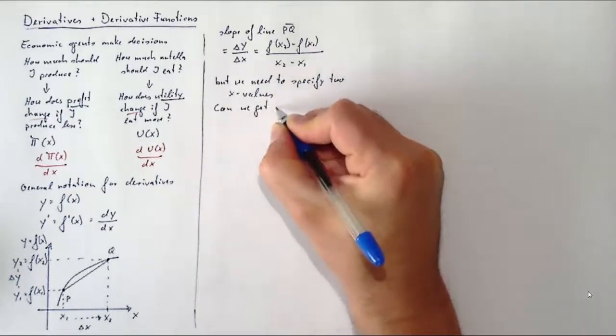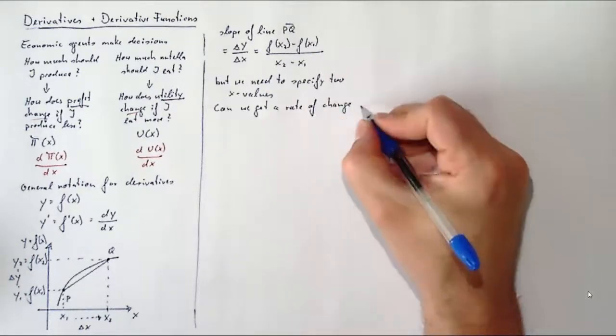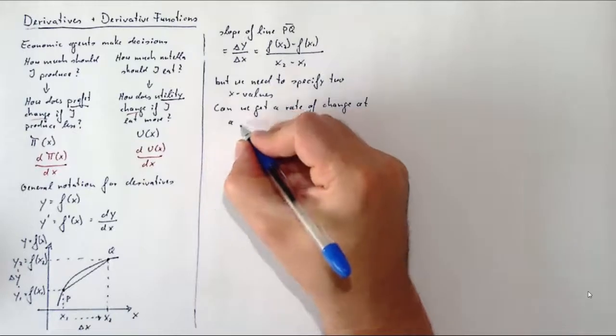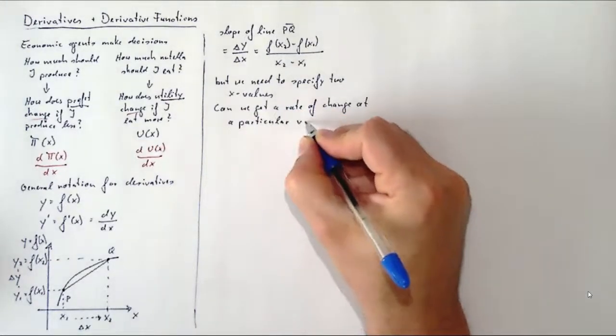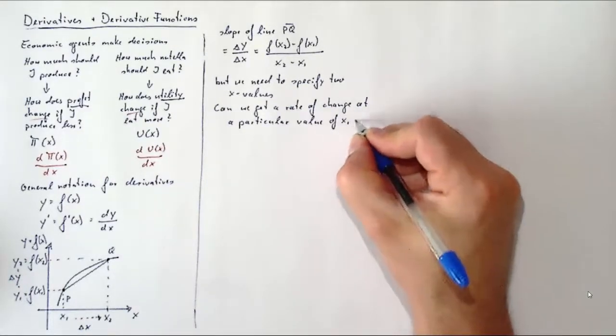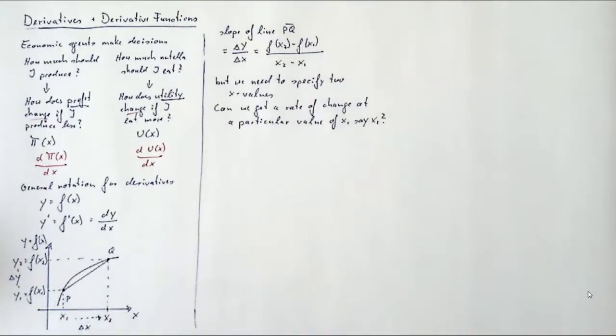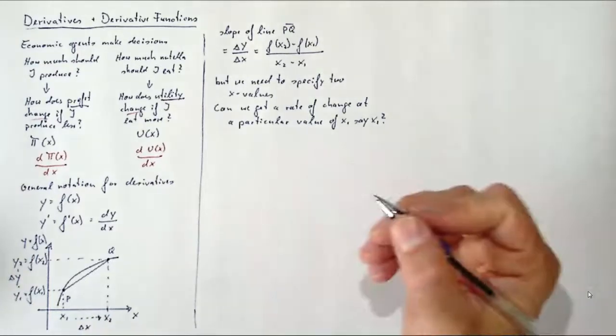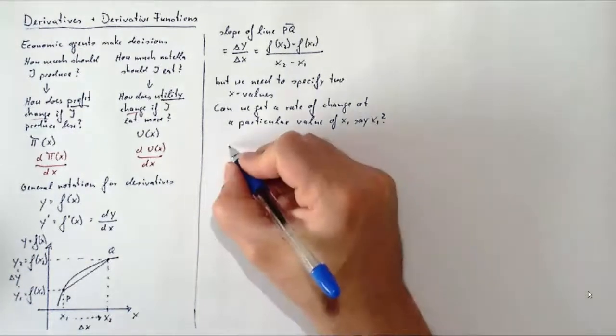What we are really after now is some sort of expression for the rate of change in a function at a particular point of x, a particular value of x, say x₁. So can we get a rate of change at a value of x₁, or do we always need to specify a second value and then say how it changes as we move from x₁ to x₂?